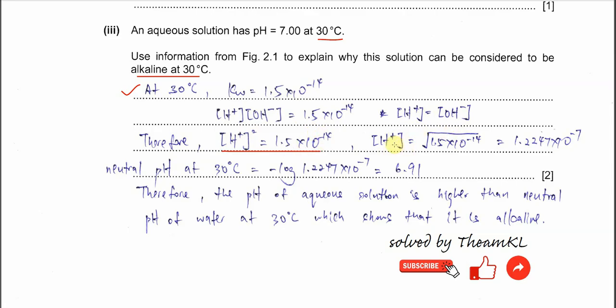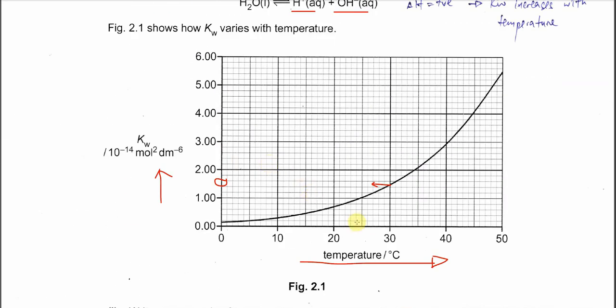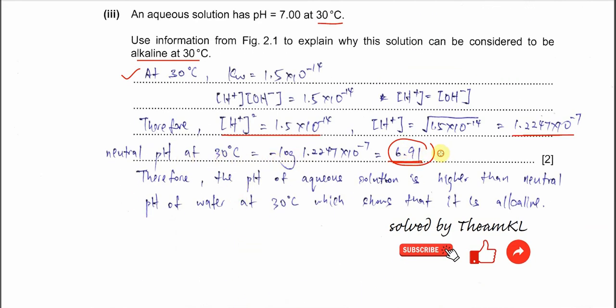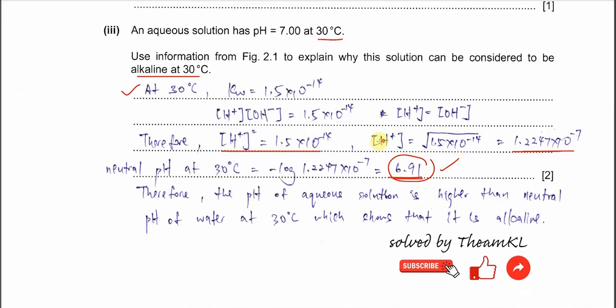Square root this, you get the concentration of hydrogen ion at 30 degrees C. We can use this to calculate the pH. Negative log gives 6.91. 6.91 is the new neutral point of water at 30 degrees C. At 25 it's pH 7. From this calculation, we know the neutral point at 30 degrees C is now 6.91. If we compare pH 7 and 6.91, this is relatively higher than this value. So we can consider the aqueous solution as alkaline.